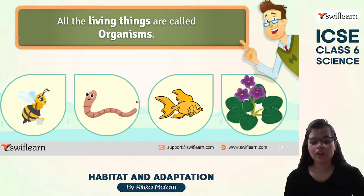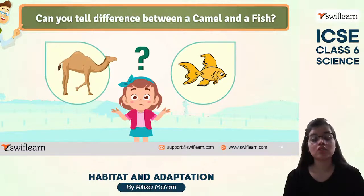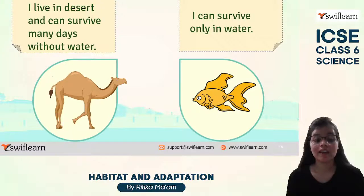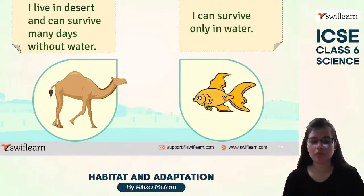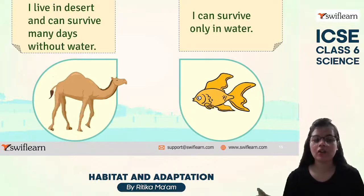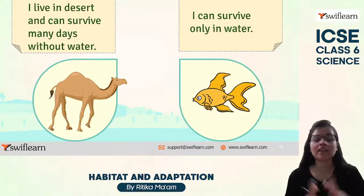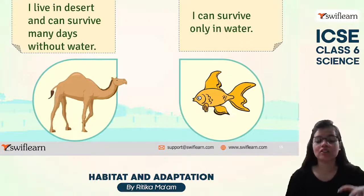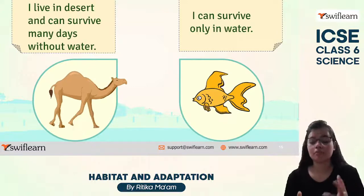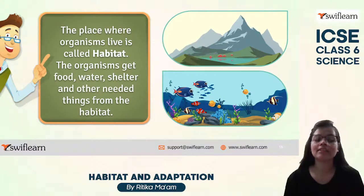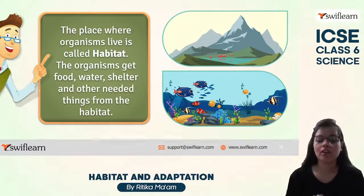All living organisms — whether humans, animals, or microorganisms — are known as organisms. Now, if I tell you the basic difference between a camel and a fish: the camel is known as the ship of the desert and can survive many days without water, whereas a fish cannot survive even a minute without water. This leads us to the concept of habitat — the place where organisms live — because they belong to different habitats.